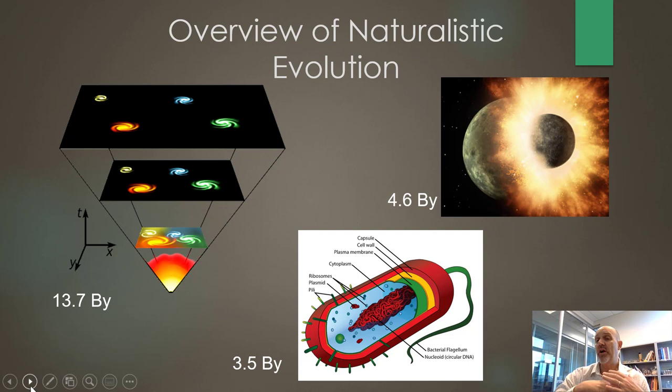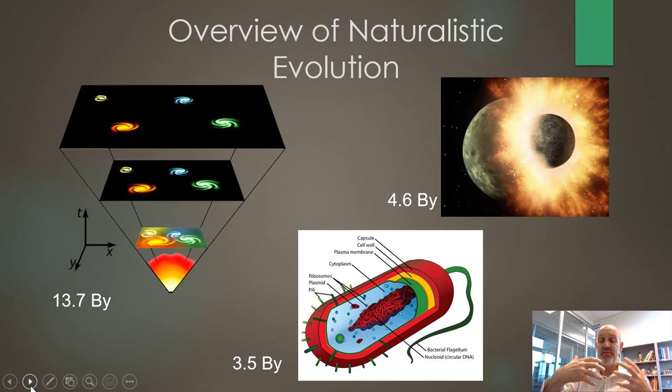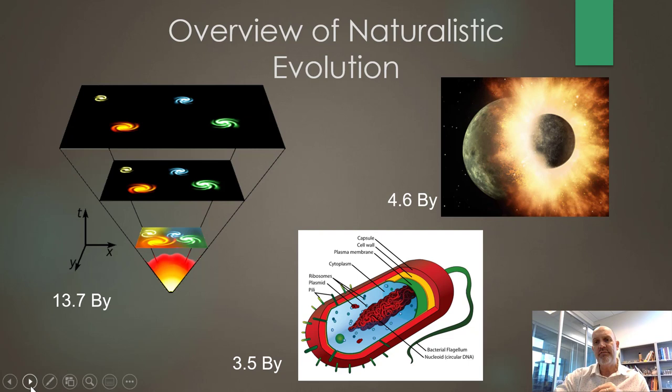So, just kind of an overview of naturalistic evolution — the big picture. Around 14 billion years ago, we have the Big Bang Theory; everything explodes out of nothing, which I personally find problematic. That is the secular view called the Big Bang. Around 4.6 billion years ago, we have the creation of the Earth, and then around 3.5 billion years ago was the first cell.